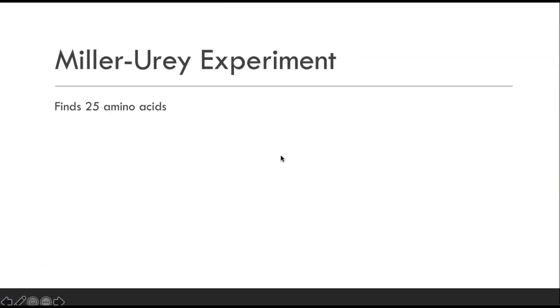What did they find? Well, from just what they put in — heat, electricity, water, and some gases — they find 25 amino acids. Miller was the lead scientist, Urey was sort of his student. Miller found a few amino acids, and it wasn't until Urey went back a few years later that he found many, many more. This experiment ends up finding 25 amino acids, which is amazing because it shows that simple chemistry — a little bit of electricity, a little bit of heat — can actually create life. Amino acids are the building blocks of proteins, and proteins are almost entirely what you are made up of.